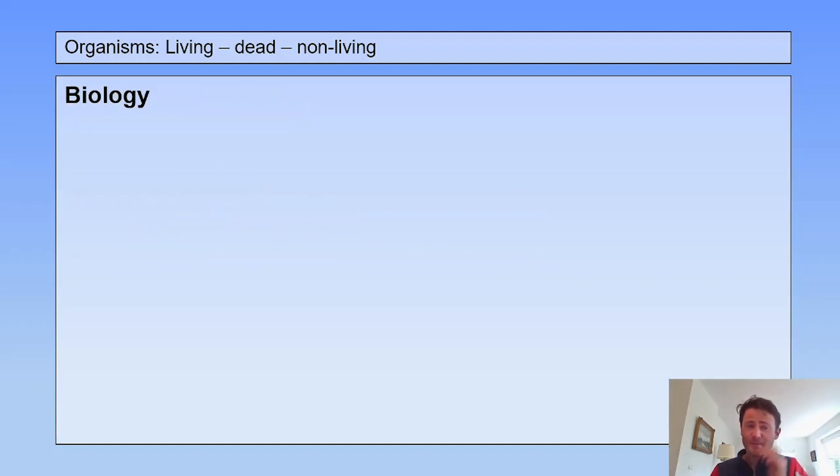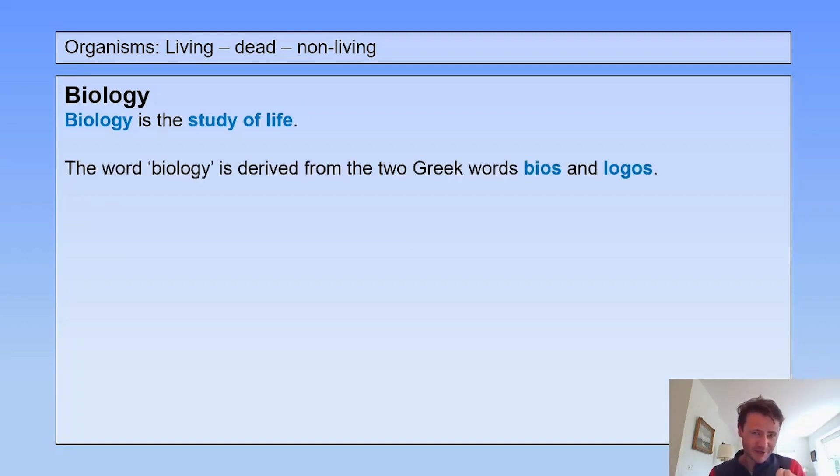Okay, first of all, biology. Biology is the study of life. And this word biology is derived from the two Greek words bios and logos. Bios can be translated as life and logos as something like teaching or science. So in biology, we study living things. And now we're going to have a closer look at these living things.